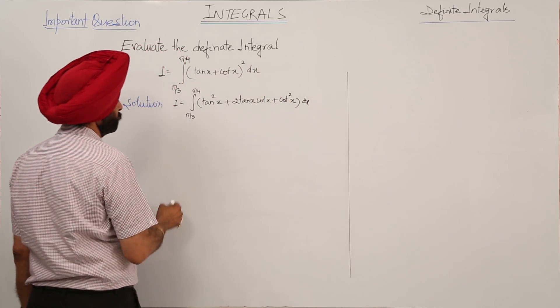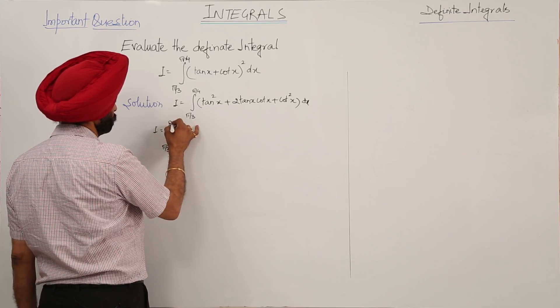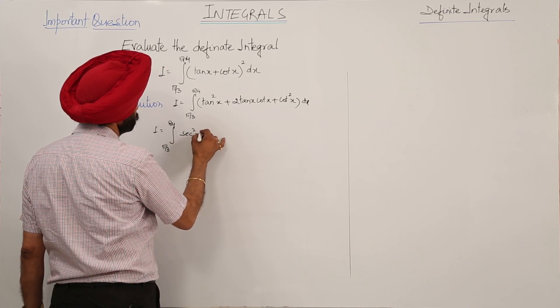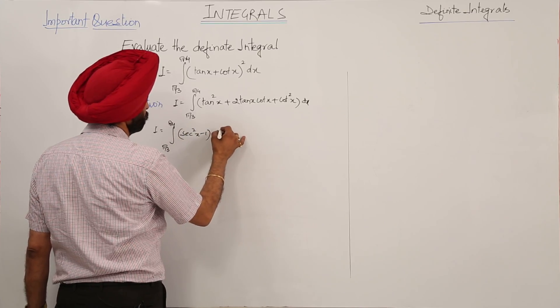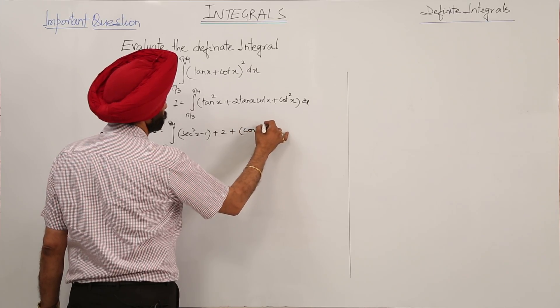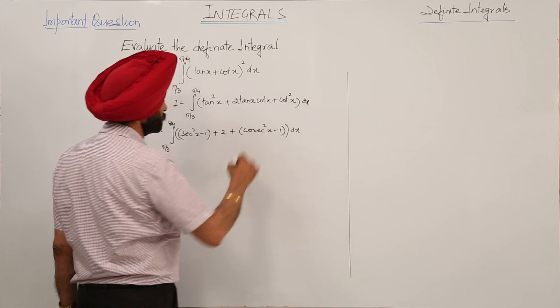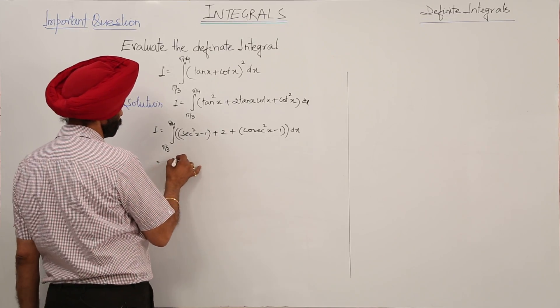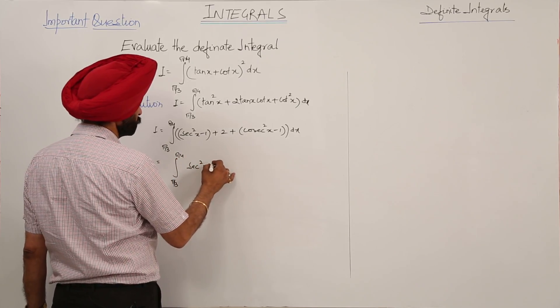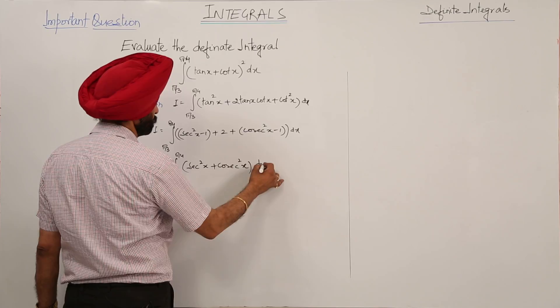Now, this becomes sec square x minus 1 plus 2 plus cot square x minus 1 dx. This simplifies to sec square x plus cot square x dx.